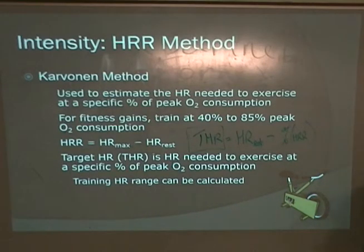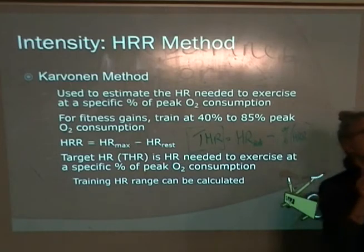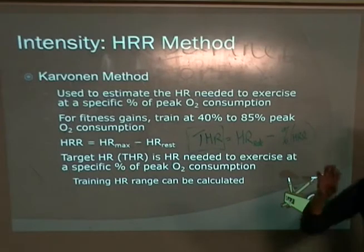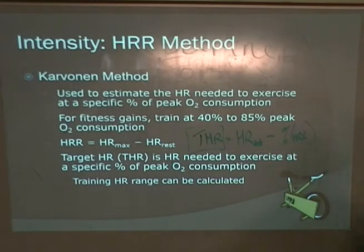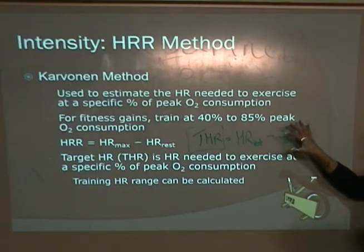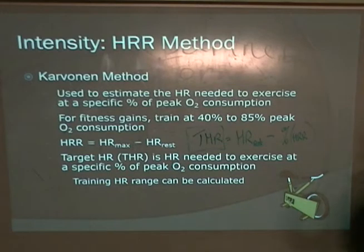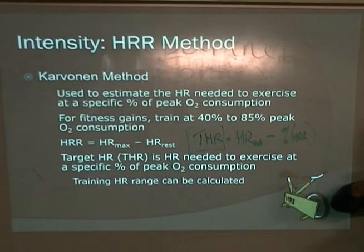If you check your guidelines for your physical activity log, the guidelines say that you have to use a physiological measure of intensity within your log — one of these two measures is really what I'm looking for. Because all the other measures that we have are really based on your opinion — they're subjective. These two are objective, because your body doesn't lie.